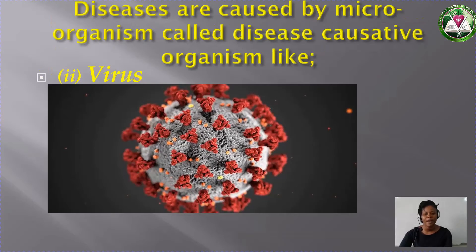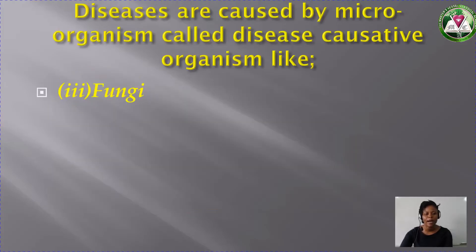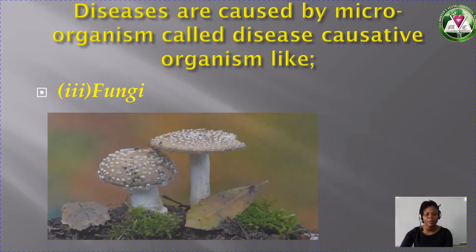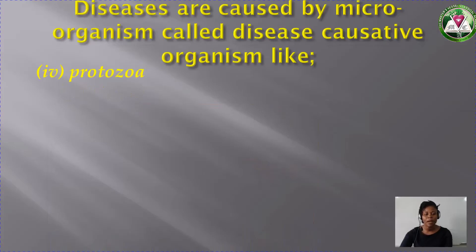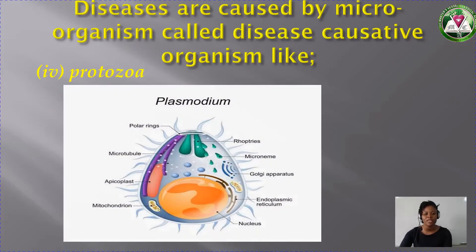Number two is virus. From the structure here you can see a structure of a virus. I believe everyone knows this structure because whenever you turn on your television you always see this — it is a structure of coronavirus. Number three, you have fungi. Fungi is another causative organism. You can see an example of fungi — there is a mushroom. Number four is protozoa. An example of protozoa is plasmodium. This plasmodium is carried by a mosquito, and when the mosquito bites a human being it transmits this microorganism plasmodium, which causes malaria.